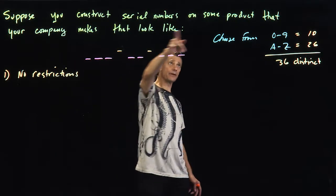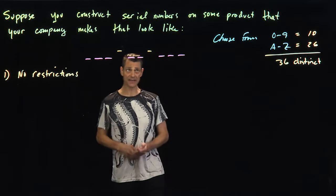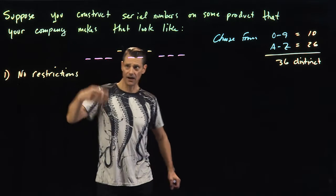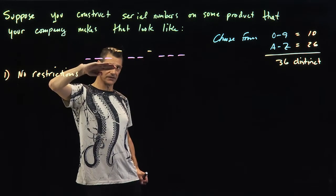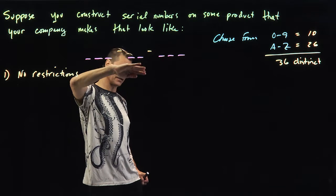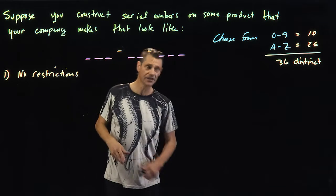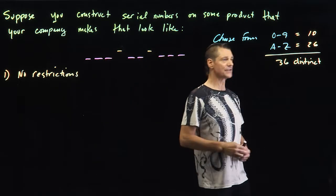Okay, suppose you construct serial numbers on some product that your company makes that look like this. There's three numbers or letters, a dash, two numbers or letters, a dash, and three numbers or letters. We get to pick through zero through nine and A through Z.